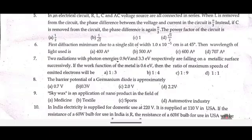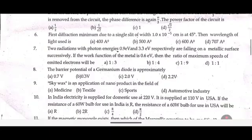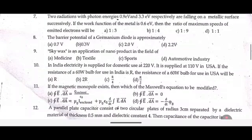Seventh one: Two radiations with photon energies 0.9 eV and 3.3 eV respectively are falling on a metallic surface successively. If the work function of the metal is 0.6 eV, then the ratio of maximum speed of the emitted electrons will be dash.